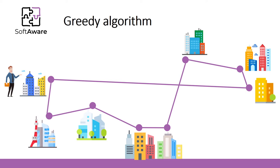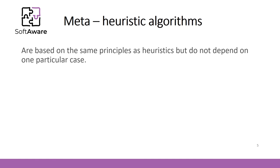Meta-heuristic algorithms are based on the same principles as heuristics, only they are created to solve different problems and don't depend on one particular case. We can use the same approach on many different problems — for example, the traveling salesman problem or chess game can be solved using the same algorithm. Usually we don't know the underlying features of a given problem and can't choose the right heuristic method, so meta-heuristic algorithms are used in these cases.